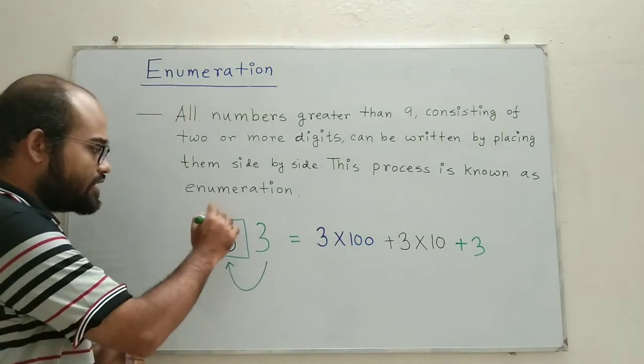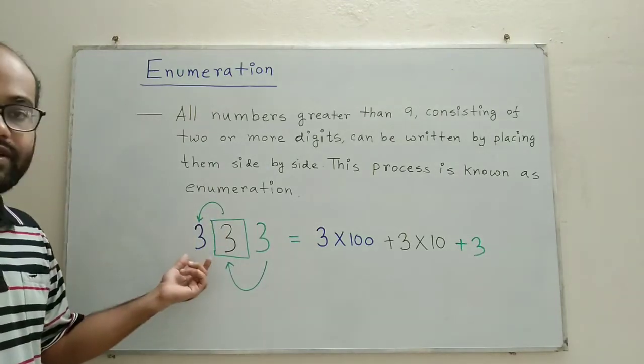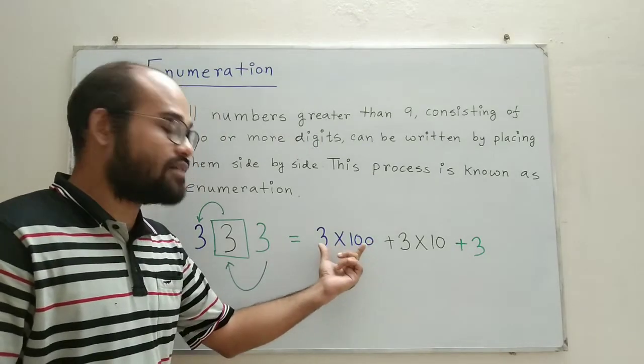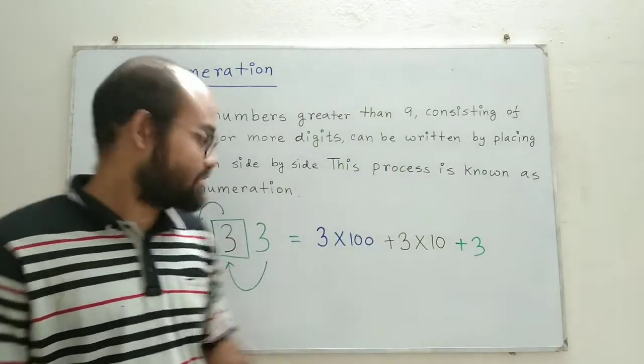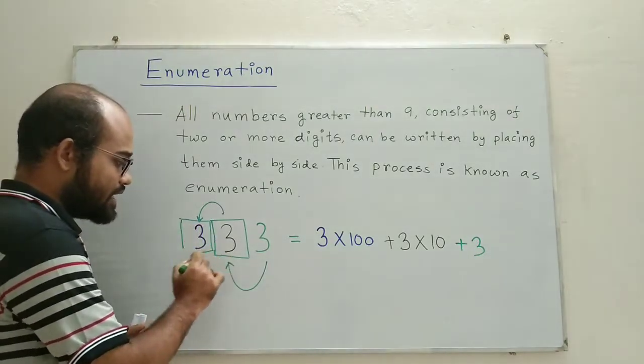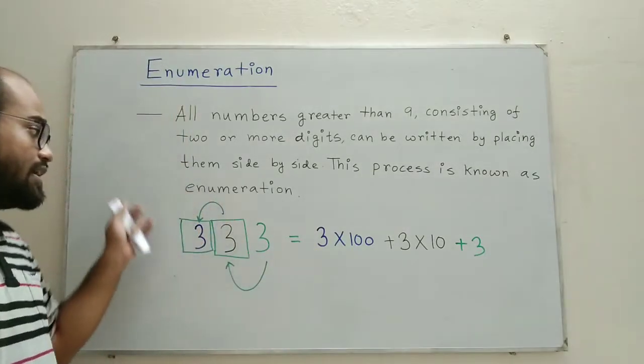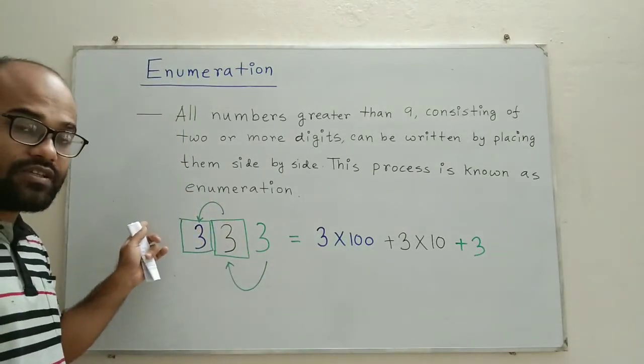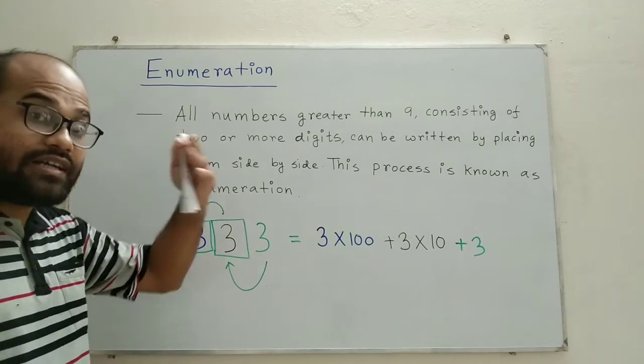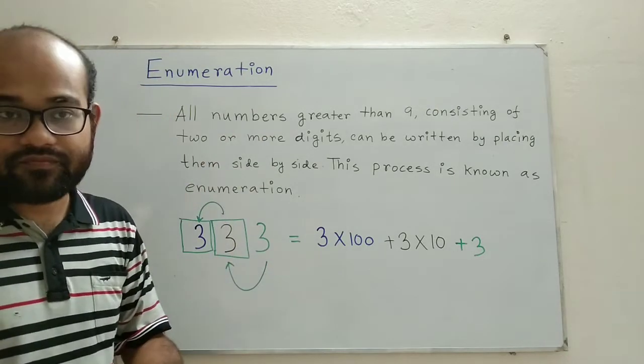Similarly, hopping further to the left, this 3 expressed in blue expresses a number 100 times greater than itself. That's why this 3 is said to occupy the hundreds place. If we had a 3 again further to the left, it would have expressed a number 1000 times greater than itself, or 3000.